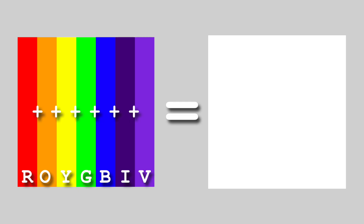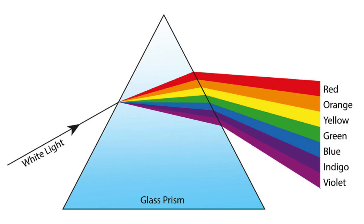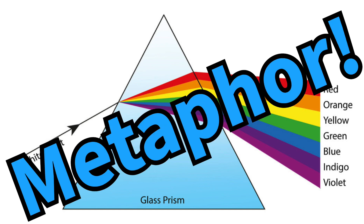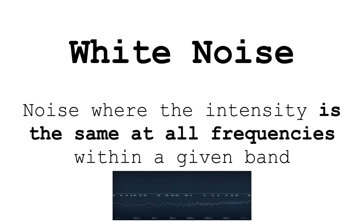White light consists of all the different colors of light mixed together — that's why we can break them out into a rainbow with a prism. So in this metaphor, white noise contains frequencies all across the spectrum at even amplitudes. White noise sounds like this. But another common type of noise you've heard of, pink noise, sounds like this.